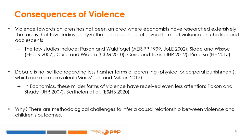Violence towards children has not been an area where economists have researched extensively. Few studies analyze the consequences of severe forms of violence on children and adolescents. Relevant studies include Paxson and Waldfogel, Slade and Wysow, Currie and Wiedem, Currie and Tekken, and Peter Sachs. Although there is strong consensus on the negative effects of severe forms of violence, the debate is not settled regarding less harsh forms of parenting such as physical or psychological punishment, which are much more prevalent. In economics, these milder forms have received even less attention, including work by Paxson and Shady and Berthelon and co-authors.